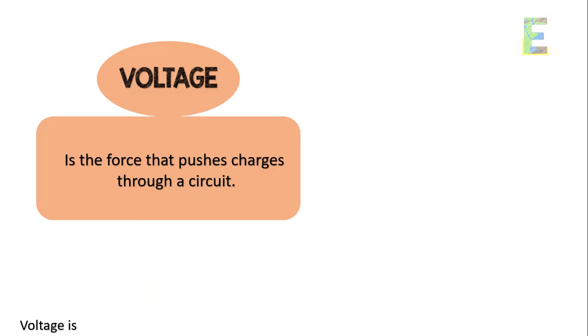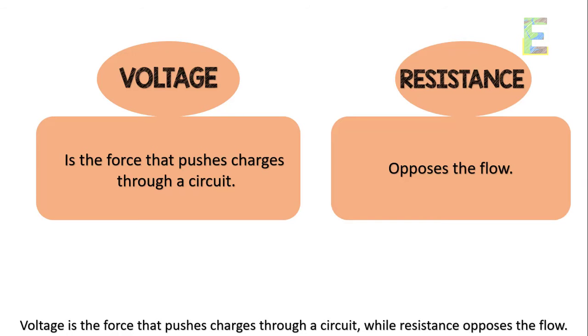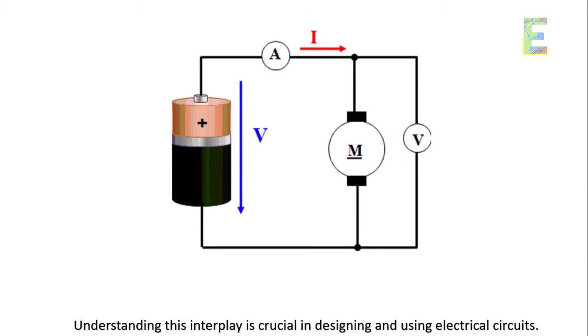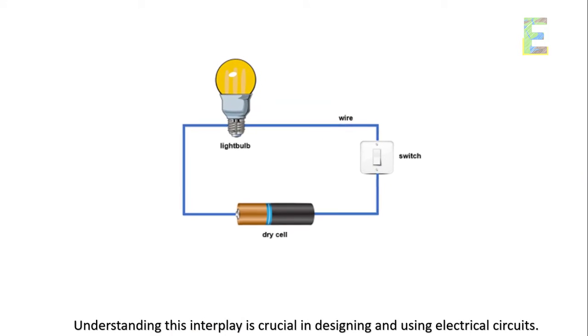Voltage and resistance. Voltage is the force that pushes charges through a circuit, while resistance opposes the flow. Understanding this interplay is crucial in designing and using electrical circuits.